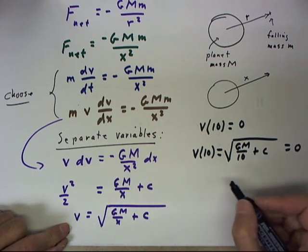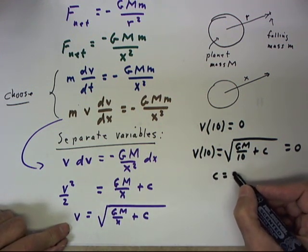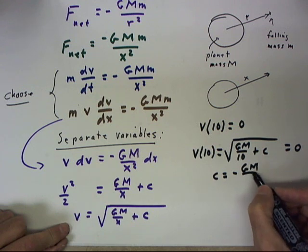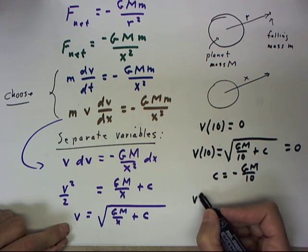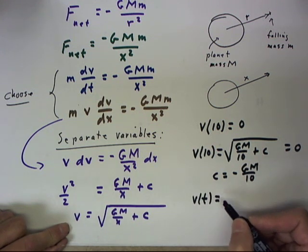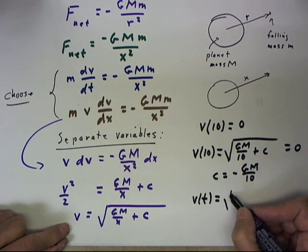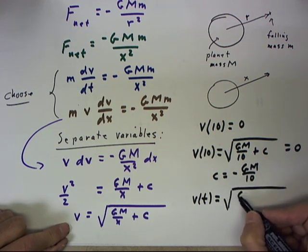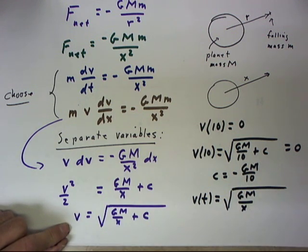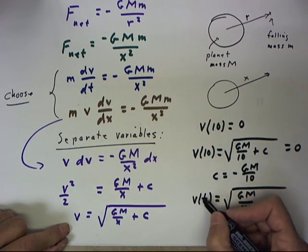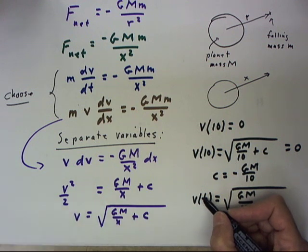This means that C equals negative GM over 10, and our velocity function would be square root of GM over X.